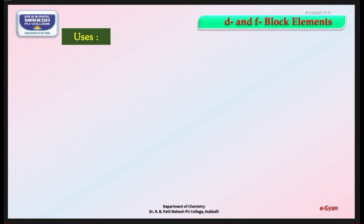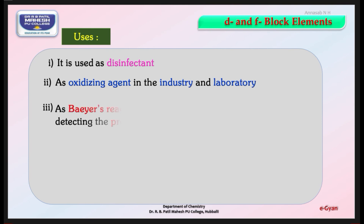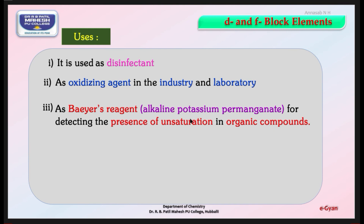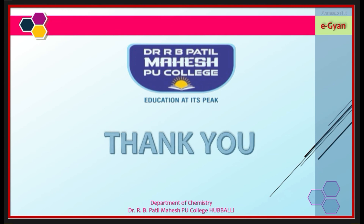Uses of KMnO4: It is used as a disinfectant and as an oxidizing agent in industries and laboratories. Alkaline KMnO4 is used as Baeyer's reagent for detecting the presence of unsaturation in organic compounds. It is also used in volumetric analysis for the estimation of ferrous salts, oxalic acid, hydrogen peroxide, etc. KMnO4 is also used in detecting halides in qualitative analysis and titrations. Thank you, dear friends. Hope you enjoyed the session.